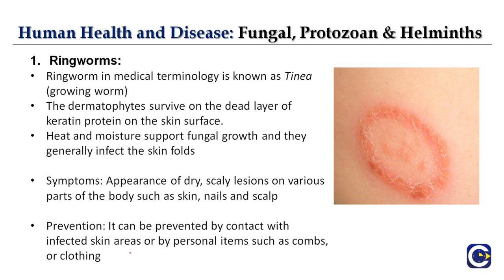Ringworm is medically known as tinea. The dermatophytes survive on the dead layer of keratin protein on the skin surface. Heat and moisture support fungal growth and they generally affect skin folds. Symptoms include dry, scaly lesions on various parts of the body such as skin, nails, and scalp — regions rich in keratin. Prevention involves avoiding contact with infected skin areas and personal items like combs and clothing.